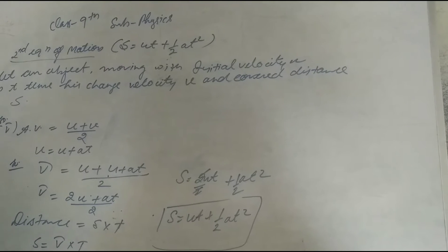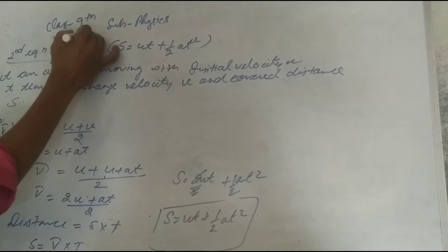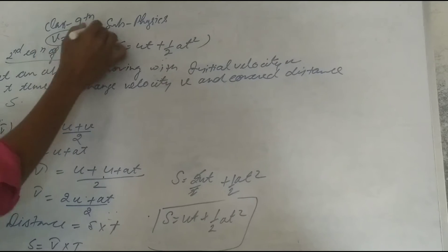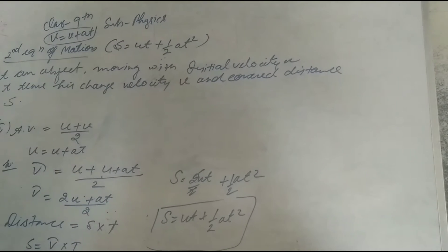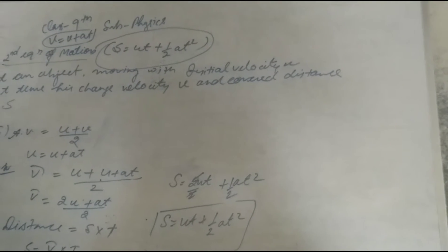In a previous video lecture we explained first equation of motion, what is first equation of motion, v equal to u plus at. So today we are going to explain how can we prove second equation of motion s equal to ut plus half a t square.